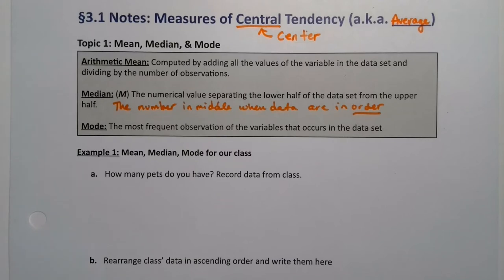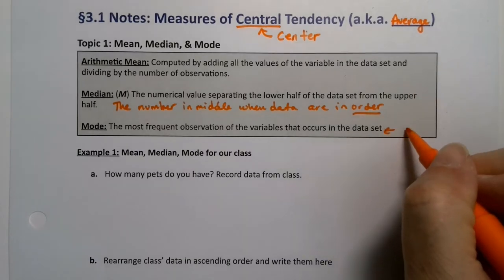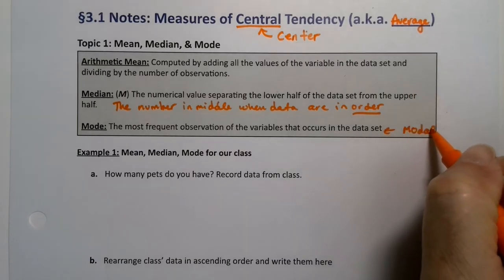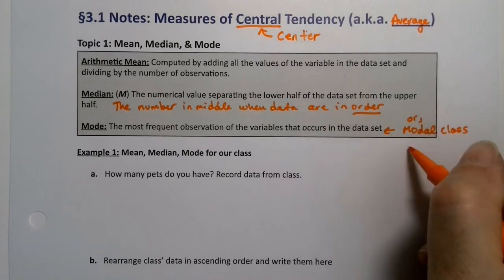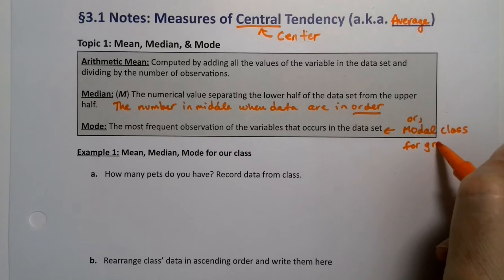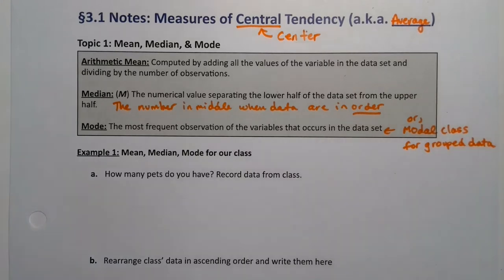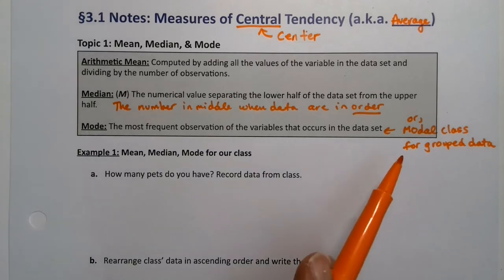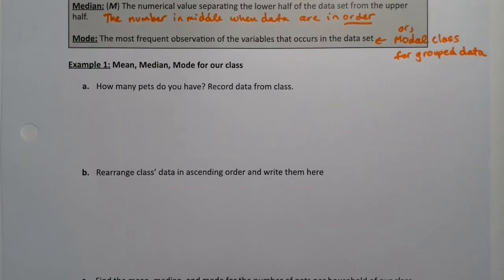We've already seen the concept of modal class. The modal class is the class that occurs most often when you're working with grouped data — for example, in a frequency table where data is grouped into intervals like 5–10, 10–20, and so on. Whichever class has the highest frequency is the modal class.